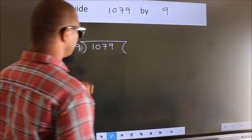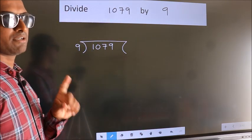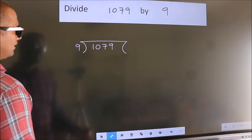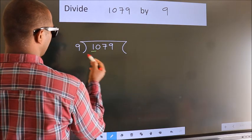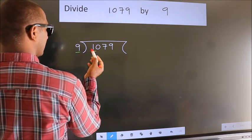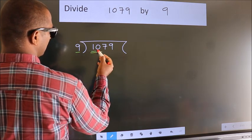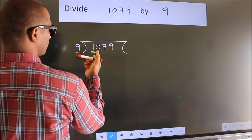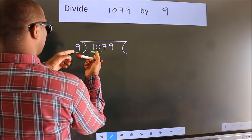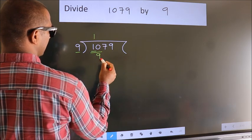This is your step 1. Next, here we have 1, here 9. 1 is smaller than 9, so we should take two numbers, 10. A number close to 10 in the 9 table is 9 ones, 9.